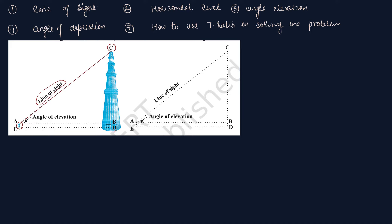Second diagram में आप देख सकते हैं, यहाँ भी A से लेके E तक यदि मैं इसको मिला देता हूँ तो यह line of sight है। जहाँ से बच्चा object को देख रहा है, दोनों के बीच का distance जिसको आप line के साथ जोड़ते हैं, इसको बोलते हैं line of sight। Side का मतलब जिस line में बच्चा या कोई भी observer देख रहा है।